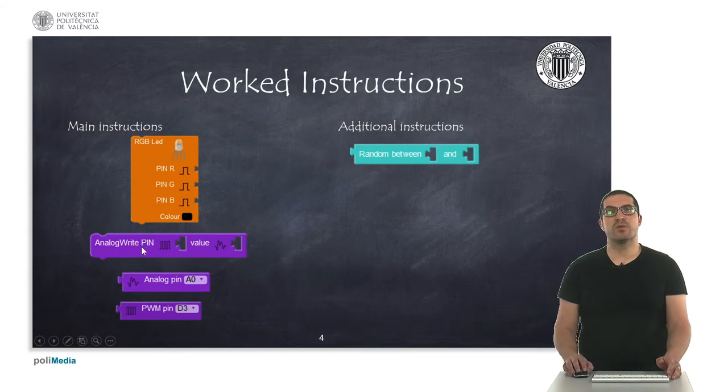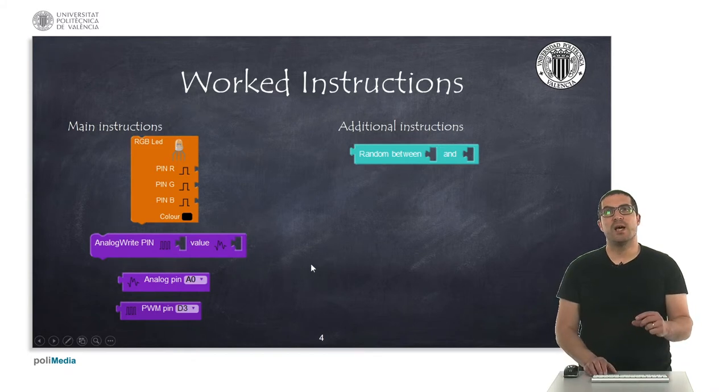Then, here, this instruction here is used to generate a PWM signal. And this will allow us to generate some kind of analog signal, which is seen as a variable voltage.